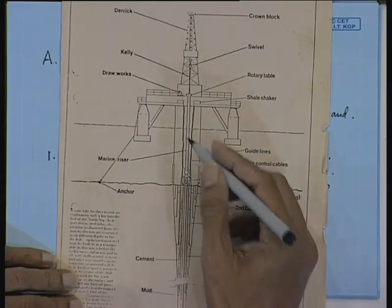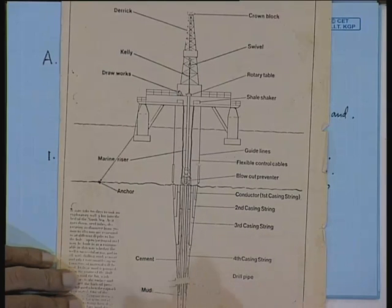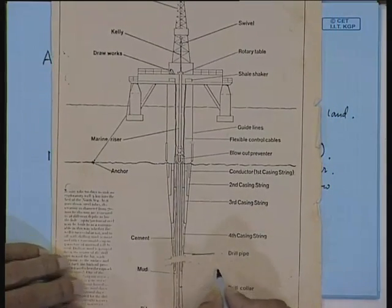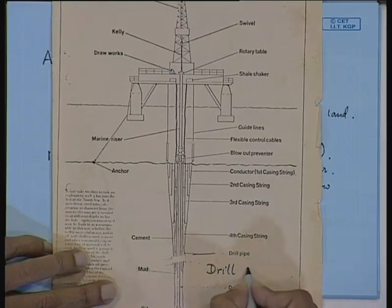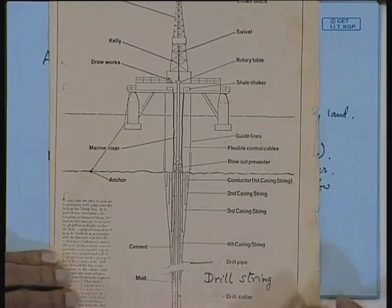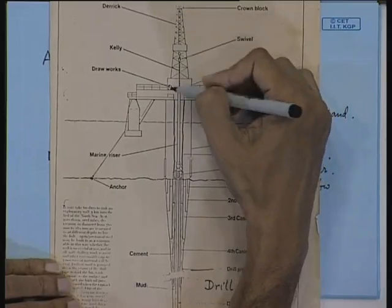This pipe is hollow for mud circulation and comes in 30-foot sections screwed at various lengths. This is called a drill collar, and the whole assembly from top to bottom is called a drill string. When you come across the term 'drill string' in drilling, it consists of your drill bit, drill collar, and drill pipe.